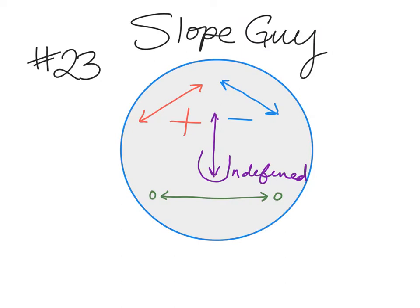My four types of slopes: we have our positive slope, as if I was walking uphill; negative slope, as if I was walking downhill; zero slope because there's no incline, it's flat; and undefined, because I can't walk across this line — I'd have to climb. That's what slope guy can help us out with. Number 23 on your green piece of paper is there all the time for you to identify the four types of slopes.